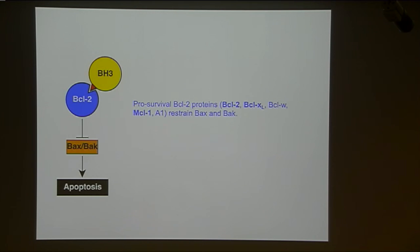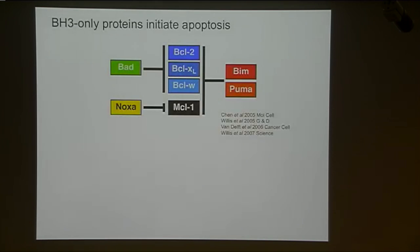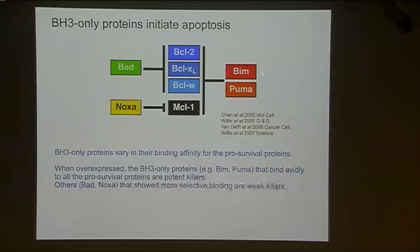This pathway is triggered by the BH3-only proteins. Our major contribution a number of years ago was to figure out that the BH3-only proteins are not functionally equivalent. It was thought for many years that any of them could replace each other, but we undertook binding studies driven primarily by Lin Chen, and she showed that the BH3-only proteins vary strikingly in their ability to bind the pro-survival proteins. Some BH3-only proteins, such as BIM and PUMA, can bind to almost all the pro-survival proteins, whereas others are much more restricted. Those very promiscuous binders turned out to be very potent killers, whereas those that were more selective turned out to be relatively inert unless combined with one another.